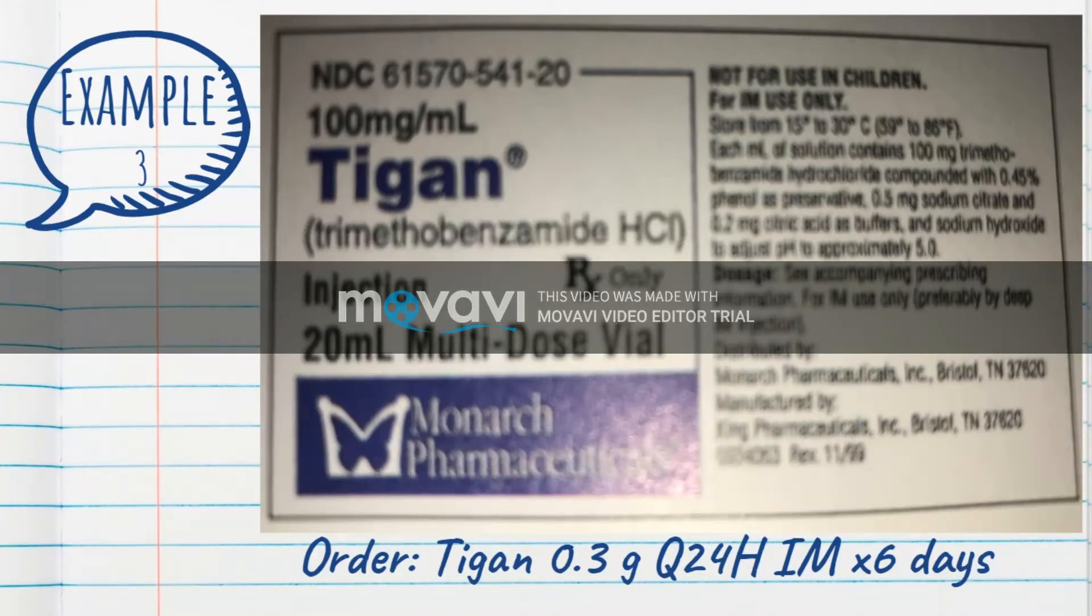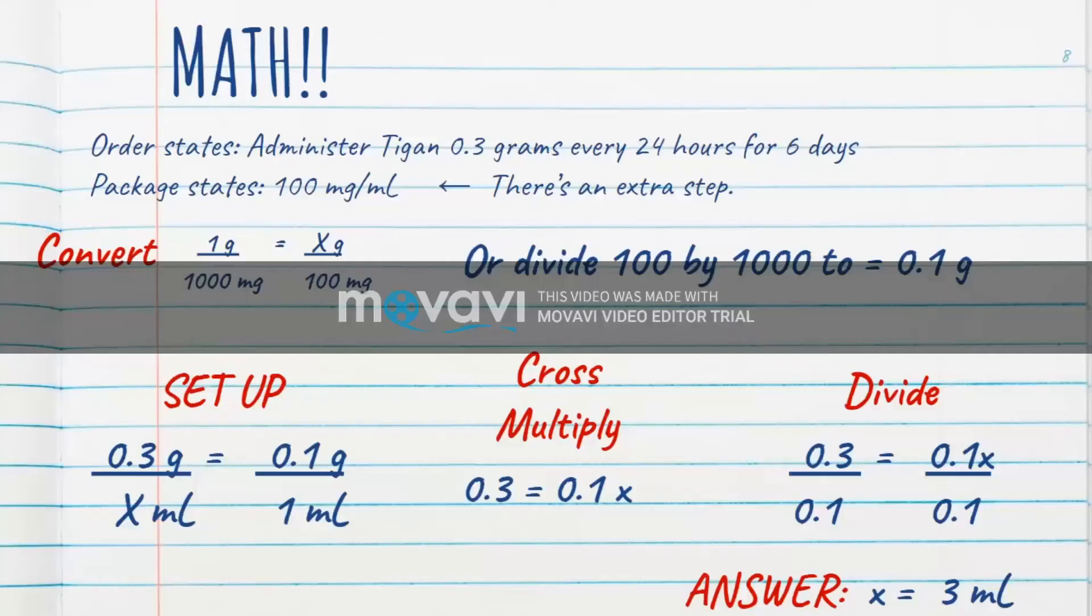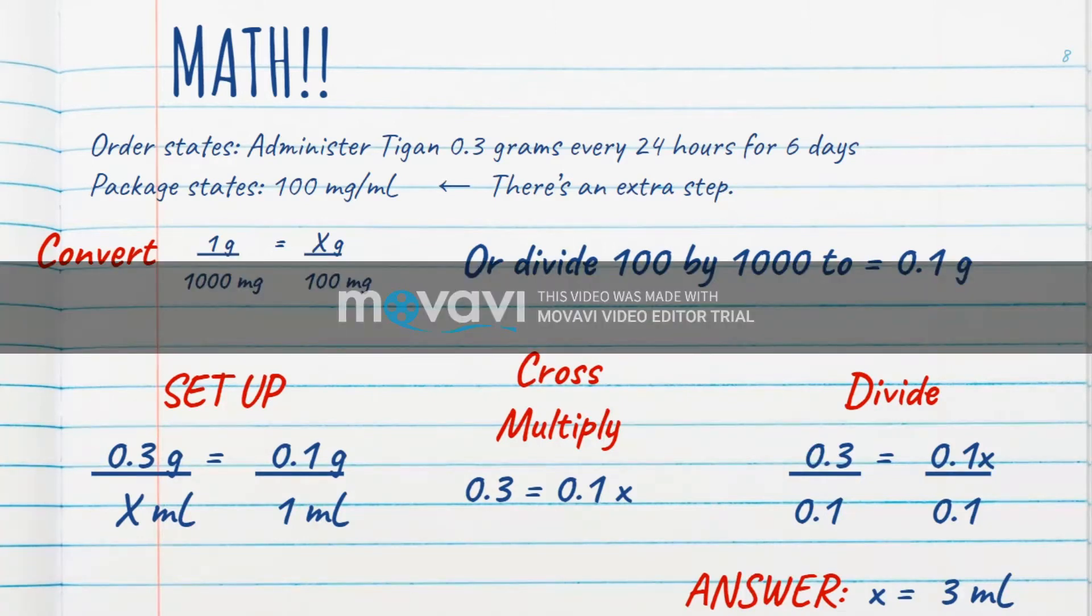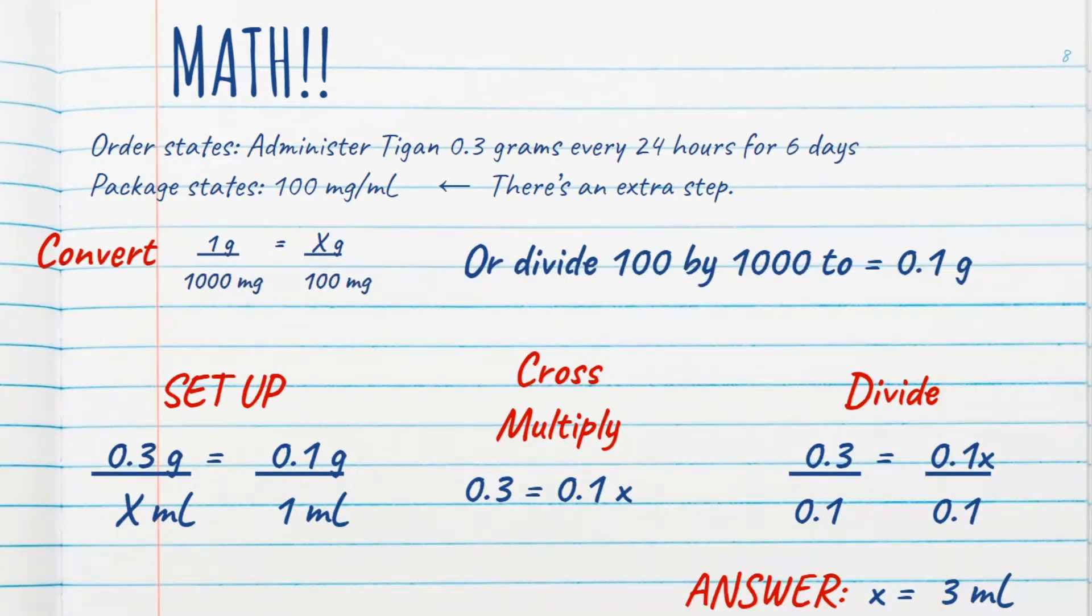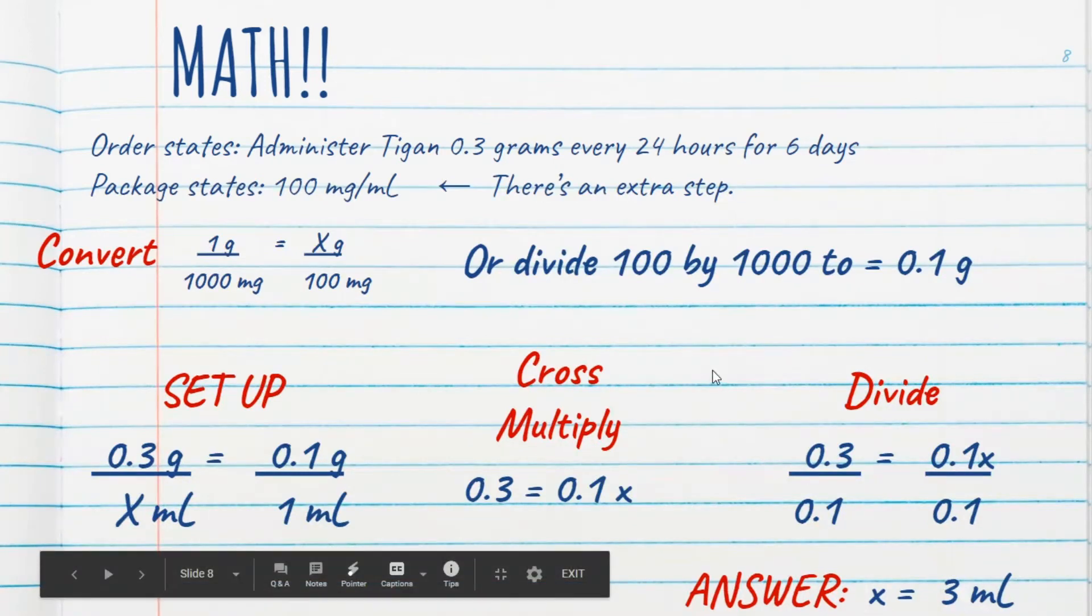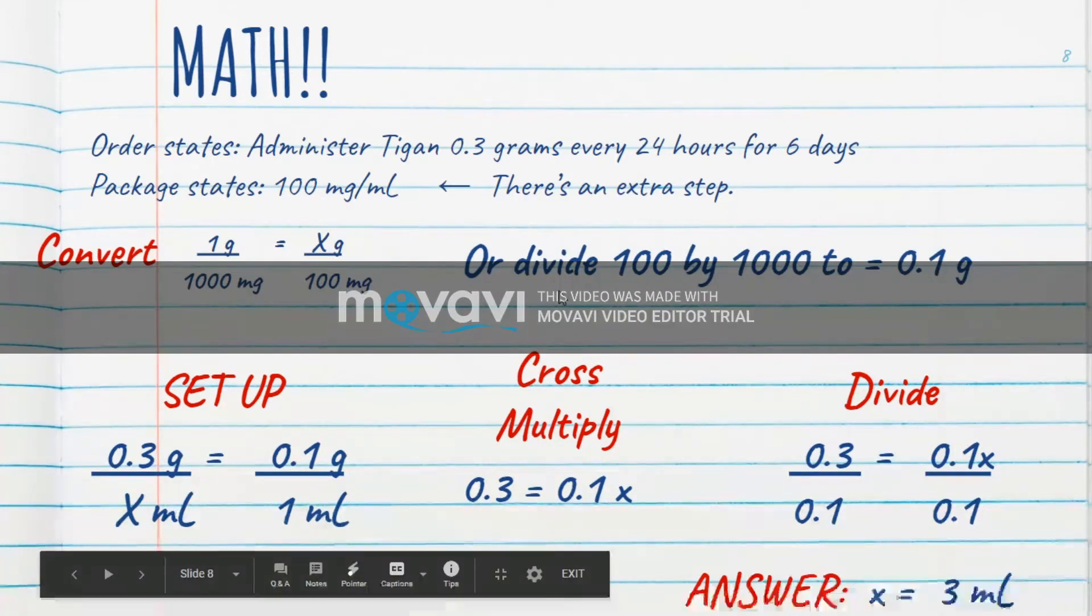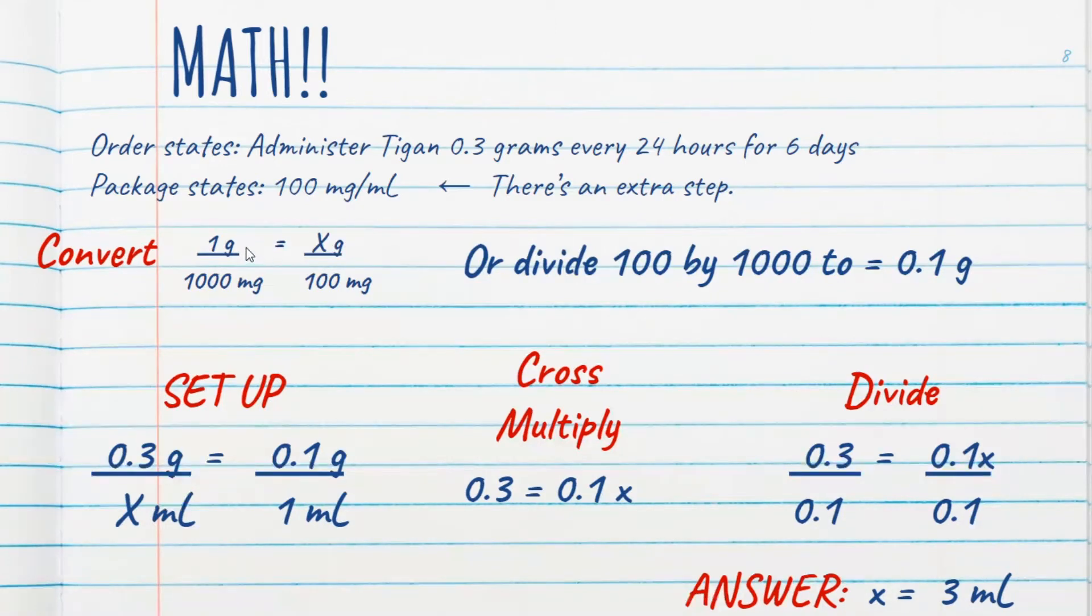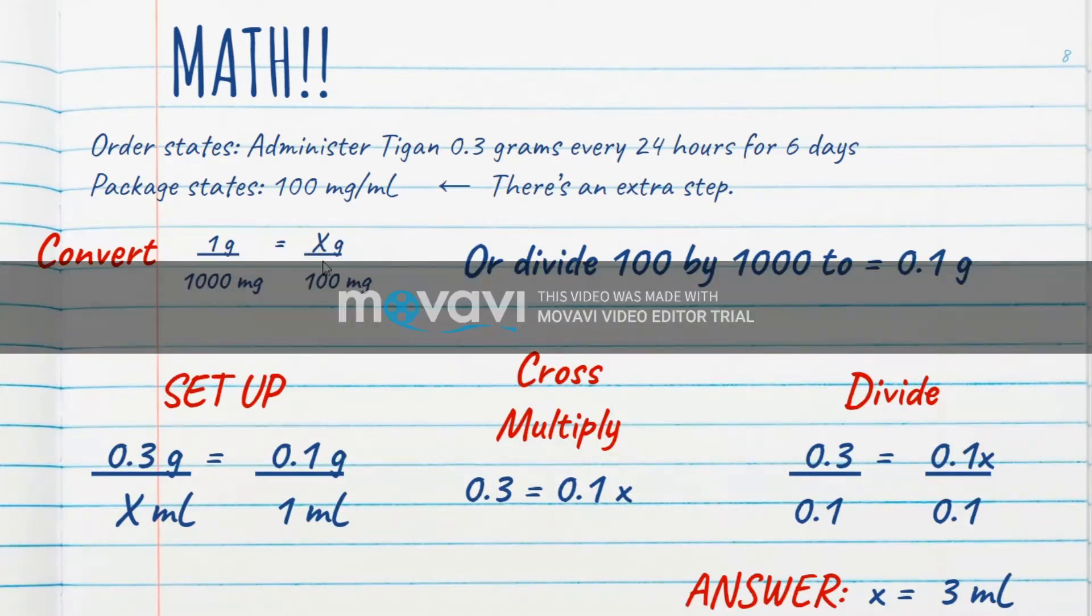That's why you need to memorize those conversion factors that I gave you. So here's the math. The order states, administer TIGAN 0.3 grams every 24 hours for 6 days. So that's how we know what we need to convert to. If the order says grams, we need to figure it out in grams and not confuse ourselves even more. And the package states there's 100 milligrams per mL. There's our extra step. So here's our conversion. I've got it written out here in a ratio and proportion. If you're super good at math, you know how to do that by just dividing. But if you want to set it up as a ratio and proportion, which is my preferred method of all the math, you write 1 gram over 1,000 milligrams equals X grams over 100 milligrams.